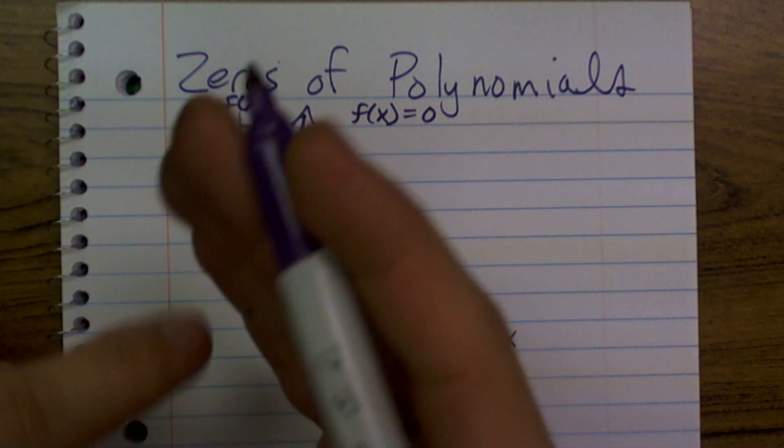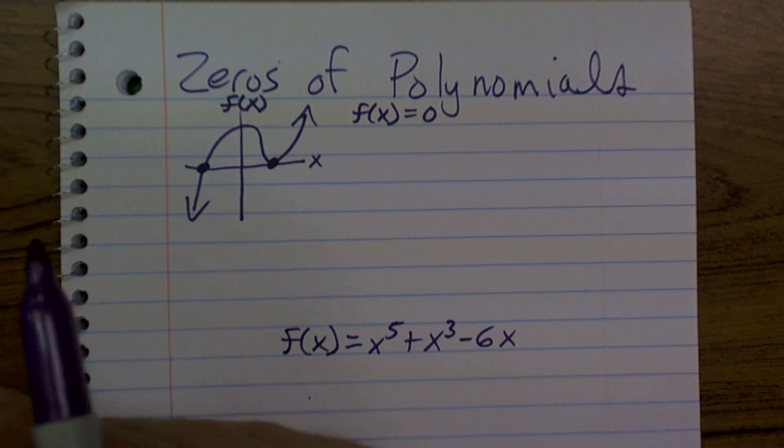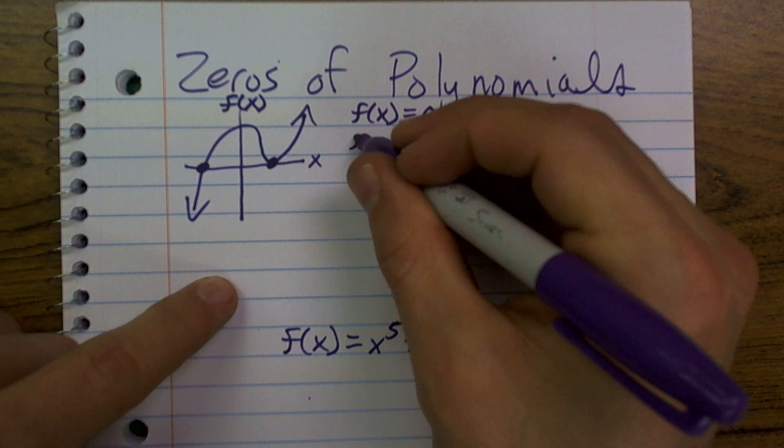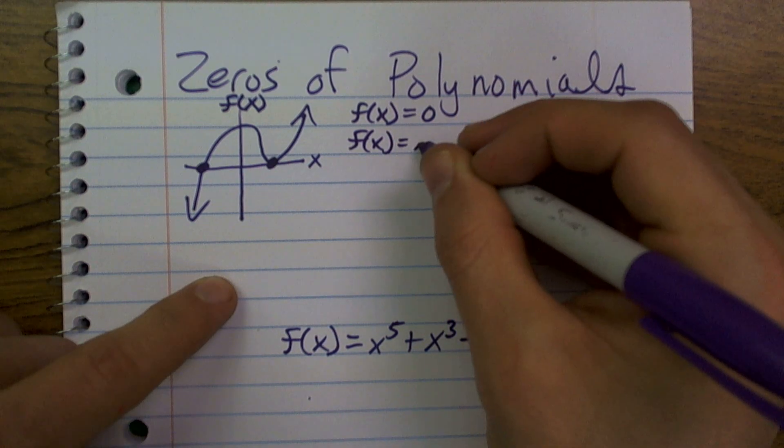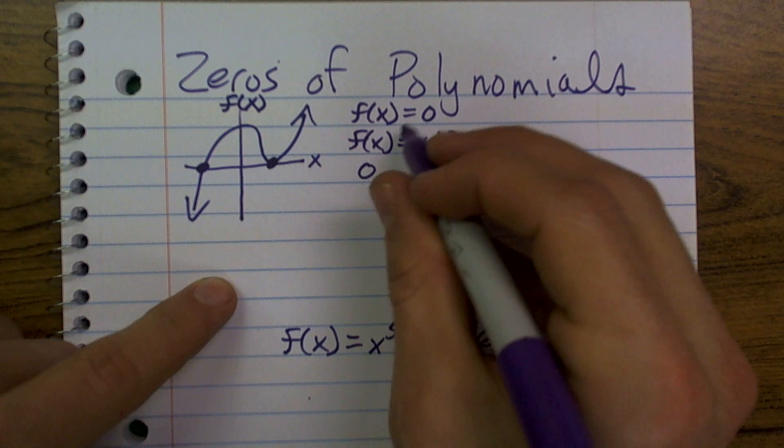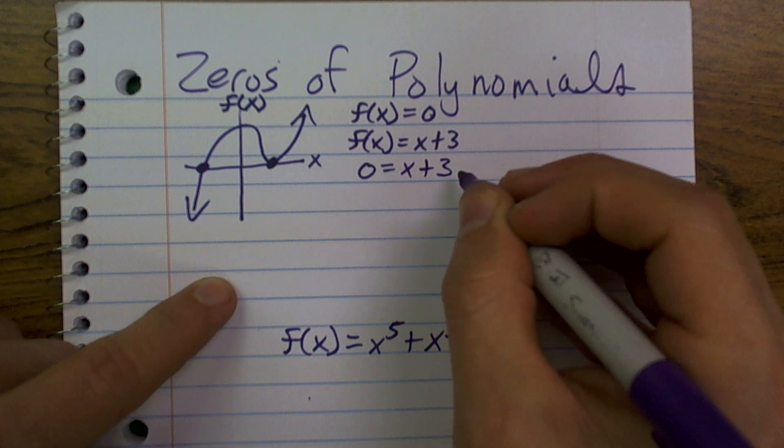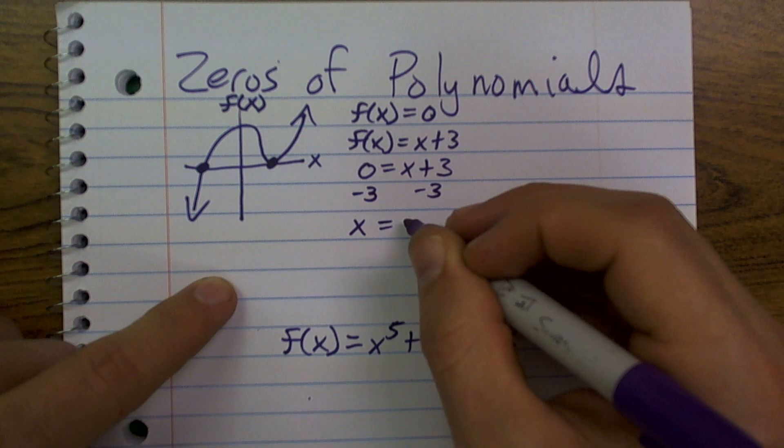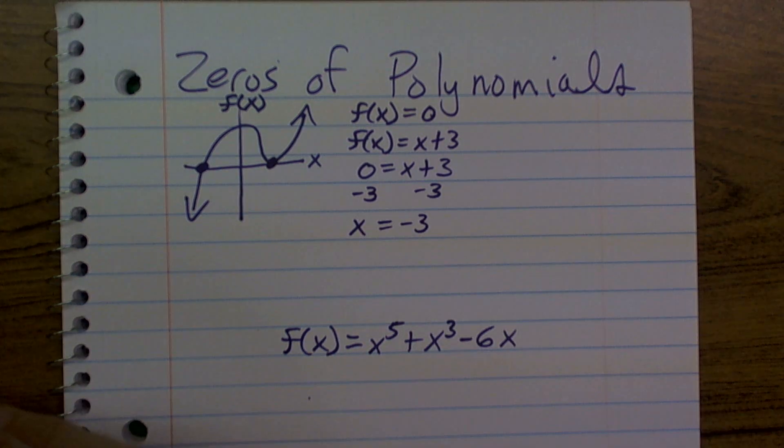So, if we're given a linear function, it's going to be fairly simple to solve for x. For instance, let's say I have f of x equals x plus 3. Well, then to solve for our zeros, you just plug zero in for f of x, and you have zero equals x plus 3. Subtracting 3 on both sides, you'd have the zeros are going to be x is equal to negative 3.